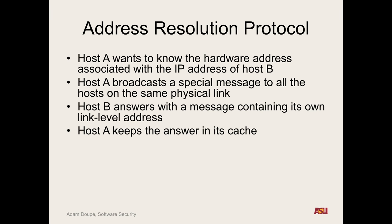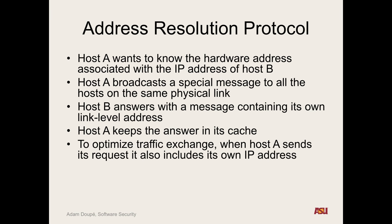So host A will keep that answer in the cache, and going forward, anytime everyone talks to host B, it knows the Ethernet frame. And it's another optimization — when A sends its request, it returns including its own IP address. How does this act as an optimization? That way, not only host B but any other host — it's like me shouting, I'm trying to talk to B, I'm A, and I have this physical address. Now everybody who hears it can write that down, and they know exactly how to talk to me, and we can skip a step.